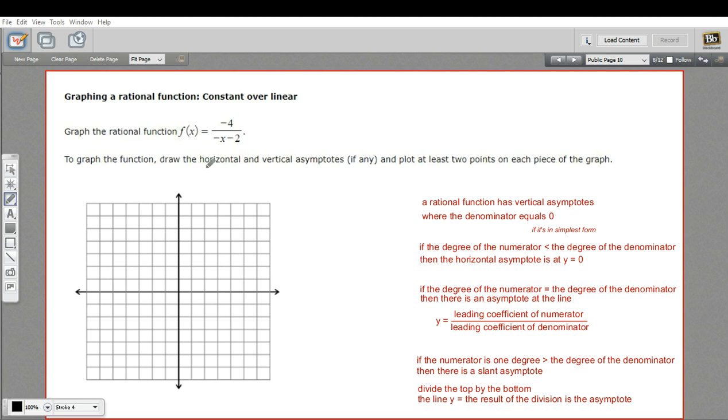Let's work on the asymptotes. We check first for the vertical asymptotes. The vertical asymptotes are where the denominator equals 0, as long as this is in simplest form. But this looks pretty simple. There's nothing I can really factor between the top and the bottom to simplify. So I can just set this denominator equal to 0 and solve for it.